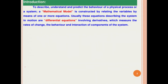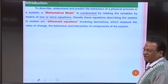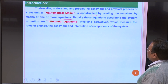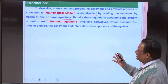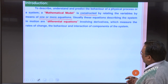To describe, understand, and predict the behavior of a physical process or system, a mathematical model is constructed by relating the variables by means of one or more equations. Usually, these equations describing the system in motion are differential equations — involving derivatives which measure the rates of change, the behavior and interaction of components of the system.